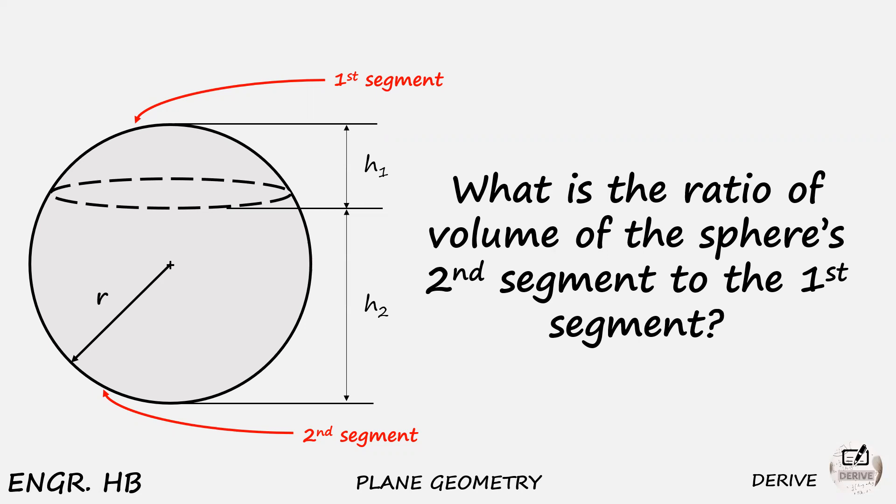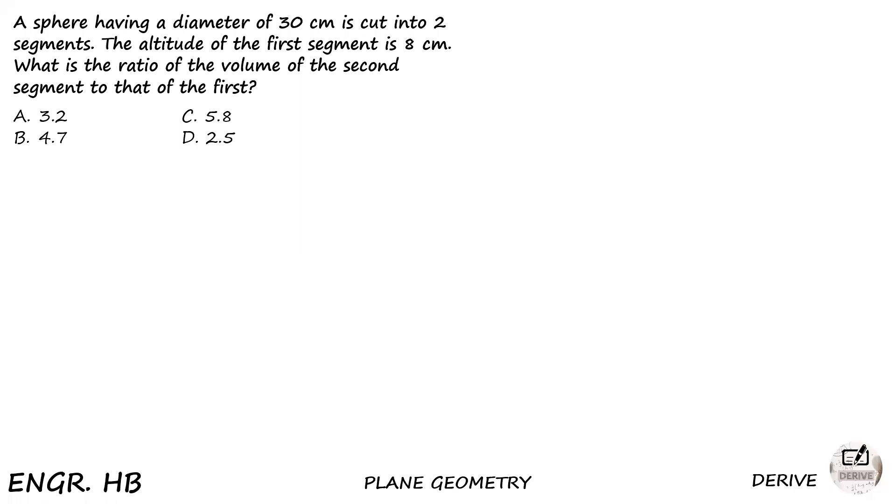Let us read the real problem here with the specific details. A sphere having a diameter of 30 cm is cut into two segments. The altitude of the first segment is 8 cm. What is the ratio of the volume of the second segment to that of the first?